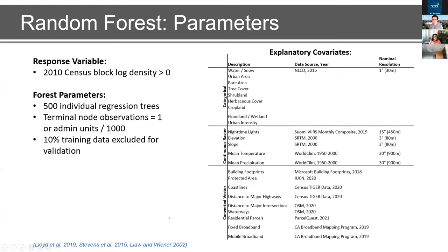Our specific random forest model differs from an out-of-the-box version. The response variable is 2010 census block logarithmic density where greater than zero. Our explanatory covariates fall into three categories: categorical inputs such as primary land cover types; continuous raster inputs such as nighttime lights and environmental information; and converted vector inputs such as building footprints, residential area, and broadband information. Each input must be normalized and formatted correctly, requiring bilinear resampling and inverse Euclidean distancing to coerce everything into a useful format.